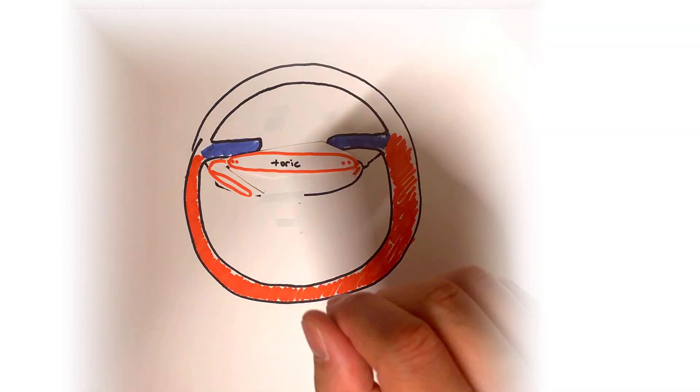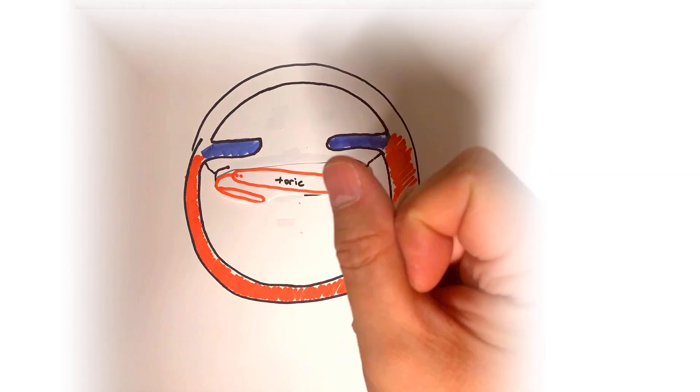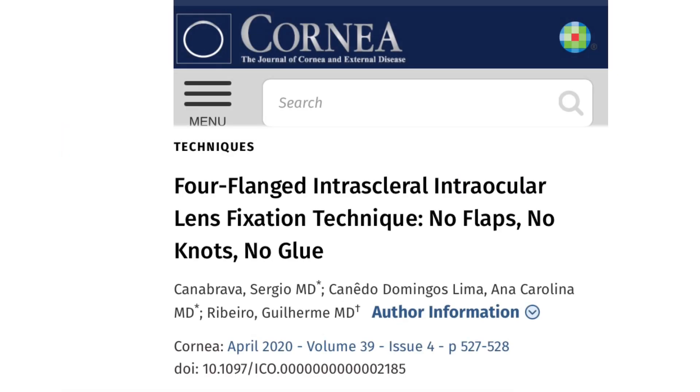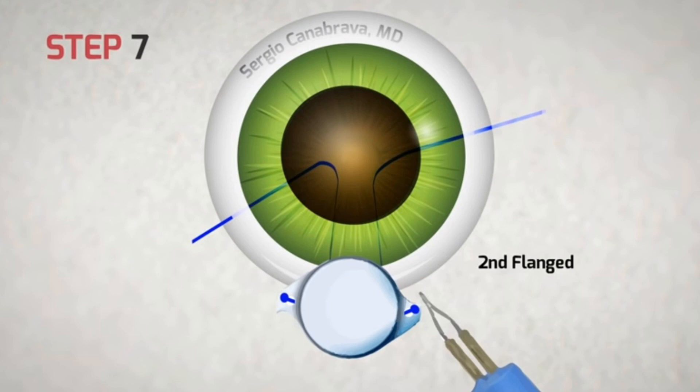There have been other methods described such as Dr. Canabrava's four flange technique, where sutures pass directly through the lens implant and anchored into the sclera. However, future studies are still needed to determine whether there's enough long-term stability of these techniques.